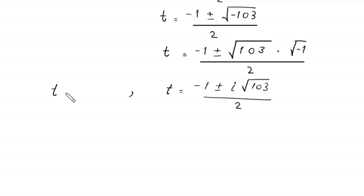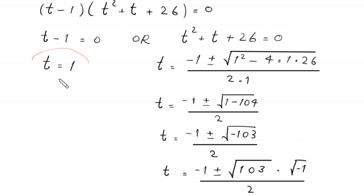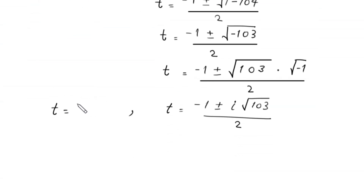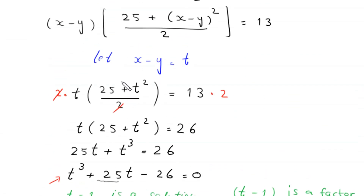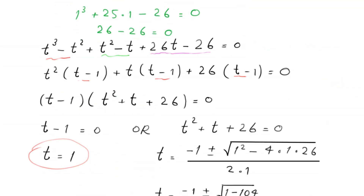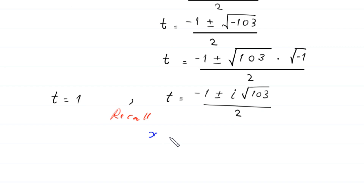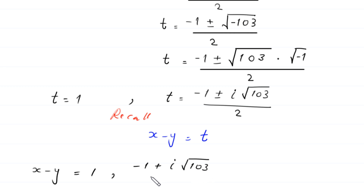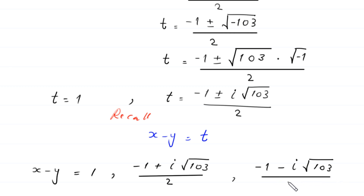Recalling that we supposed x minus y equals t, we get three values of x minus y: the first is 1, the second is (negative 1 plus i times square root of 103) divided by 2, and the third is (negative 1 minus i times square root of 103) divided by 2. So we have three solutions for x minus y.